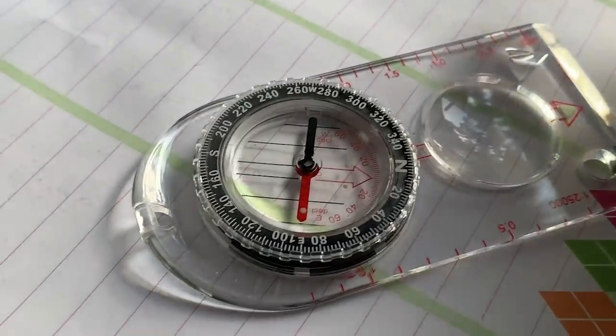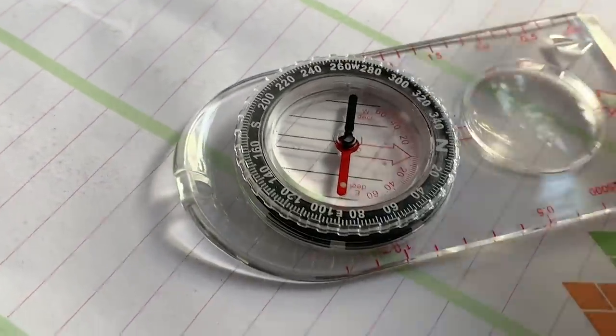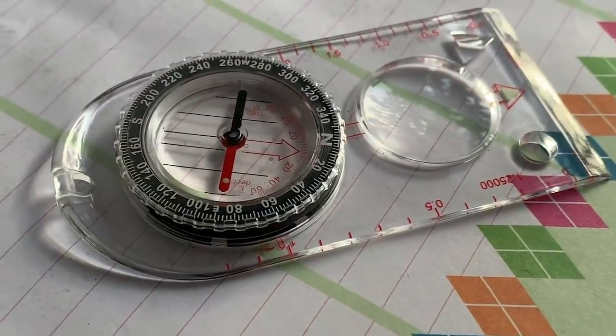Don't believe me? Ask anyone who's taken a standard northern region compass below the equator. Yes, I said northern region compass. This is a zone one compass. It was made to be used in the upper northern hemisphere like in the United States.